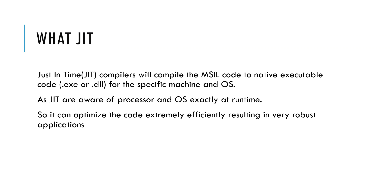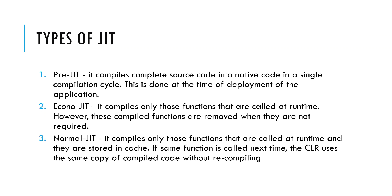What is JIT? Just-In-Time compilers compile MSIL code to native executable code — either EXE or DLL — for the specific machine and operating system. Since JIT is aware of the processor and OS exactly at runtime, it can optimize the code extremely efficiently, resulting in very robust applications. There are different types of JIT: Pre-JIT compiles the complete source code into native code in a single compilation cycle at the time of deployment. EconoJIT compiles only those functions called at runtime and removes them when no longer required. Normal JIT compiles only functions called at runtime and stores them in cache, so if the same function is called again the CLR uses the cached compiled code without recompiling.